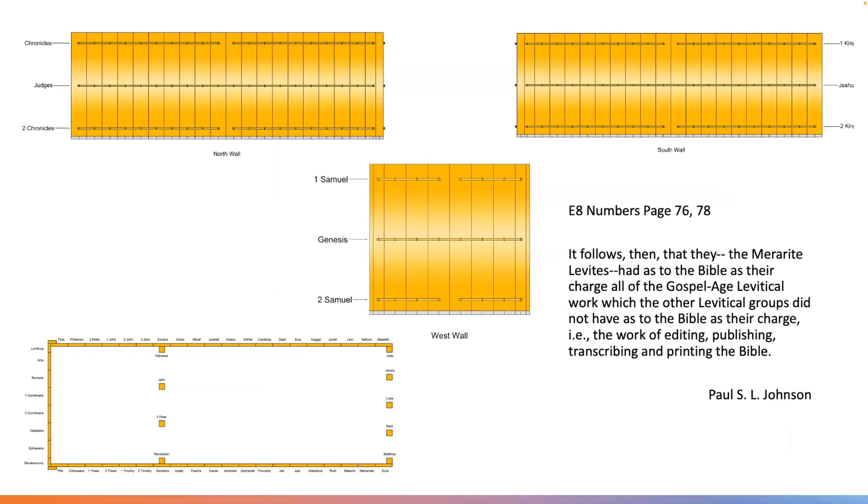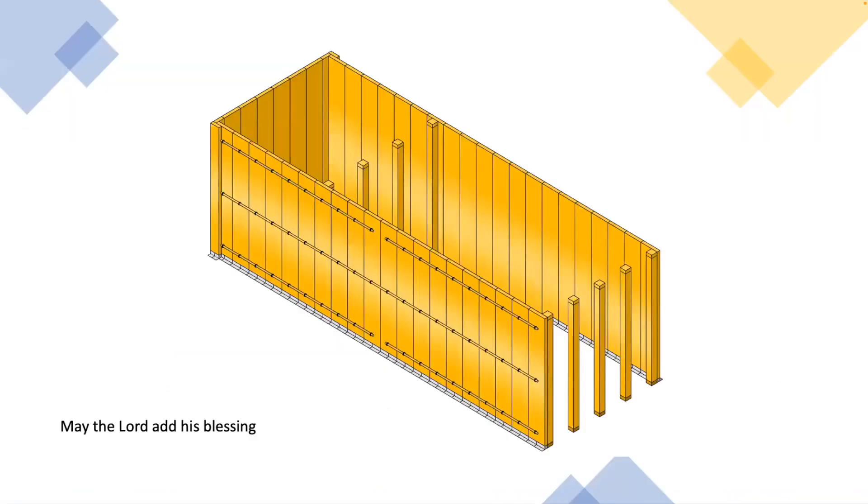So it follows then that they, the Merarite Levites, had as to the Bible their charge all of the Gospel Age Levitical work which the other Levitical groups did not have as to the Bible. That is, the work of editing, publishing, transcribing, and printing the Bible. May the Lord add His blessings.